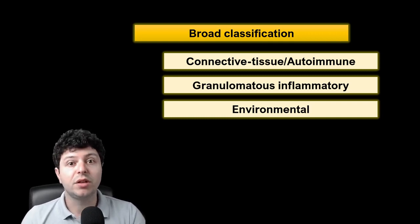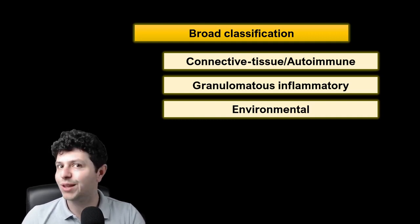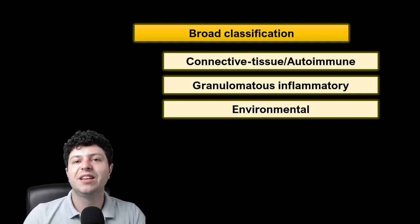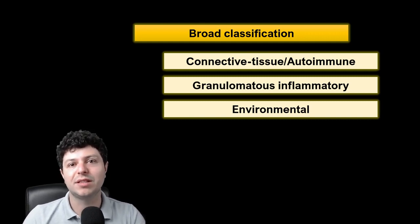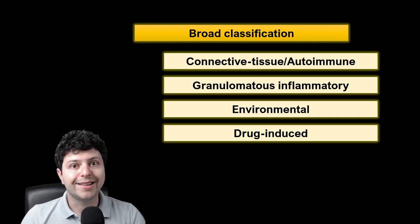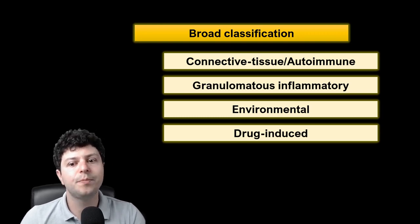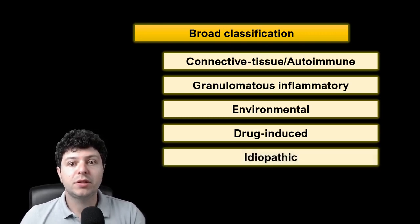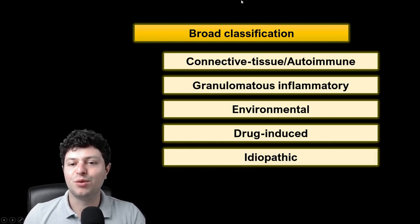It might be an environmental cause leading to the ILD — chronic hypersensitivity pneumonitis comes to mind here, which can be caused by a lot of exotic things such as hot tub lung or bird fancier's lung. You could also have a drug-induced ILD as a reaction to a medication given for another condition. Then there's the big group of idiopathic — when we've really ruled out some of these causes and can't come up with something, we call it idiopathic, which just means undetermined.